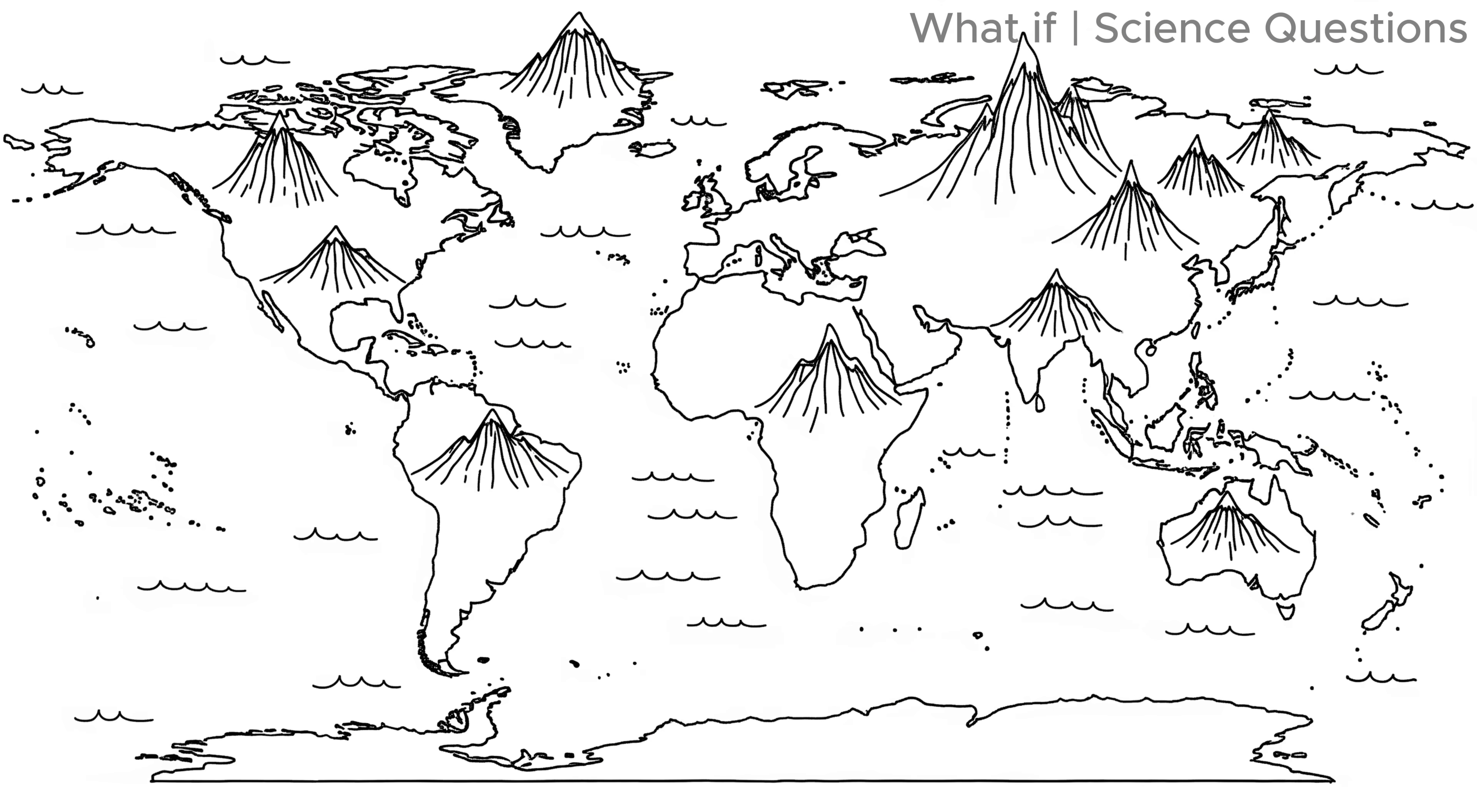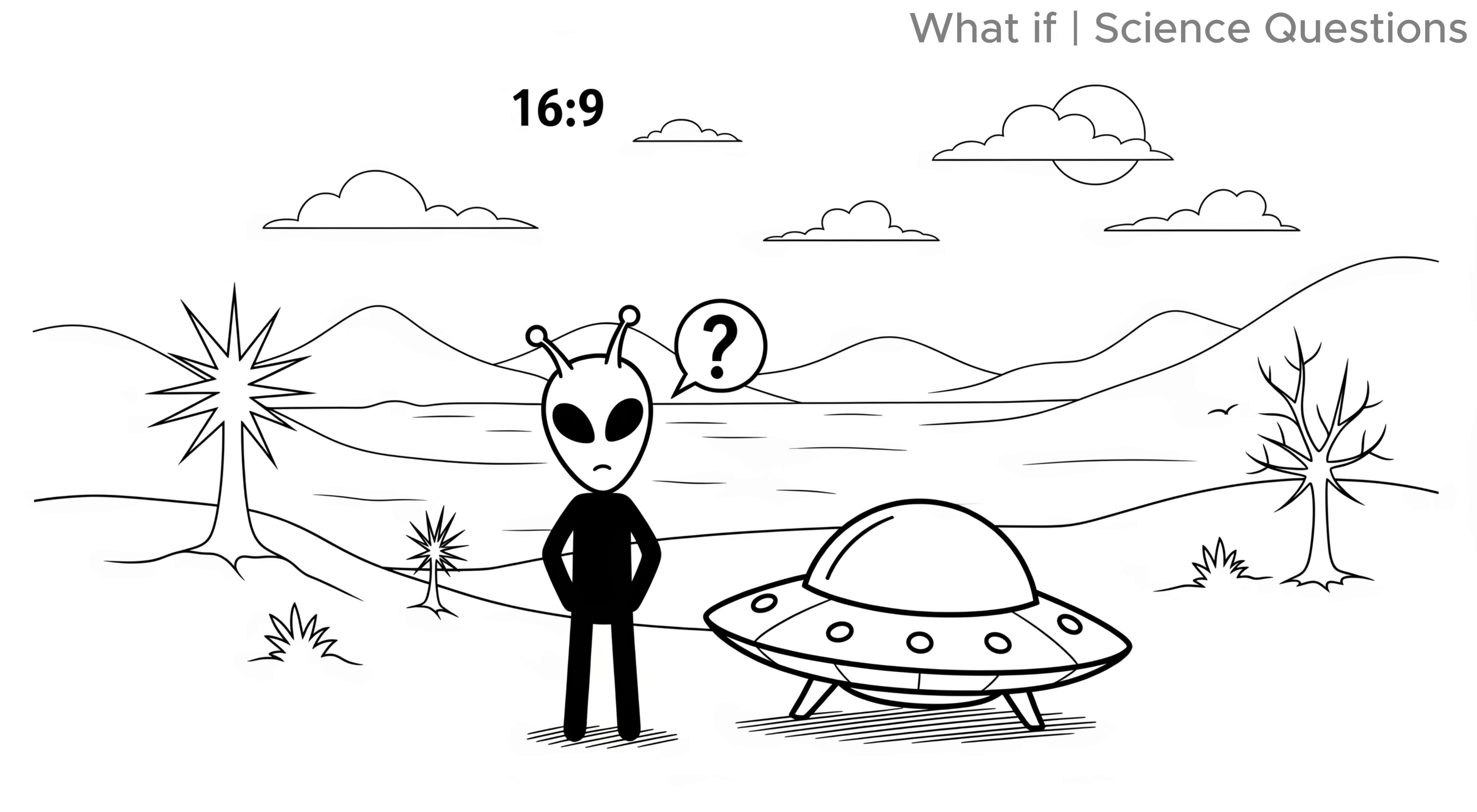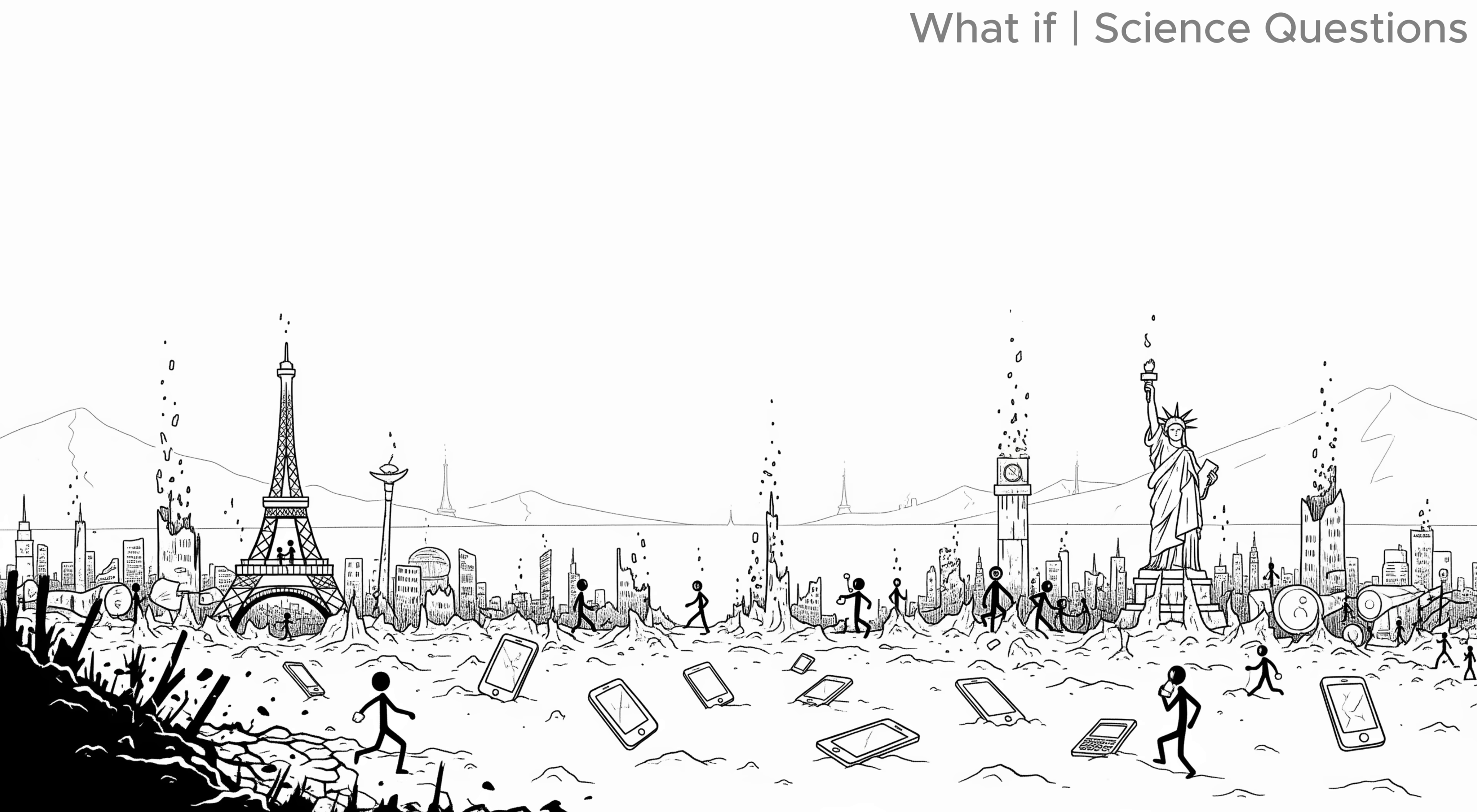In one million years, Earth would be almost unrecognizable. Continents would have shifted slightly. Mountains would have risen and crumbled. Glaciers would have advanced and retreated. If an alien species landed then, they might not even know humans had existed. Our cities would be dust. Our monuments gone.